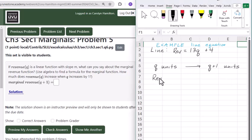So then your revenue at q units is 13q plus 4. But then at q plus 1 units, it'd be 13 times q plus 1 plus 4.